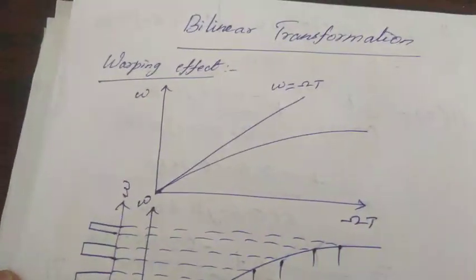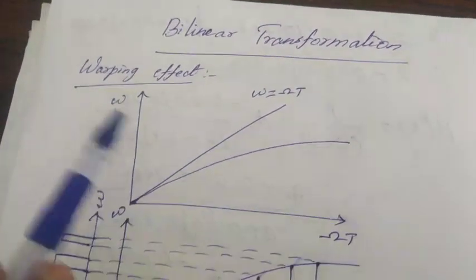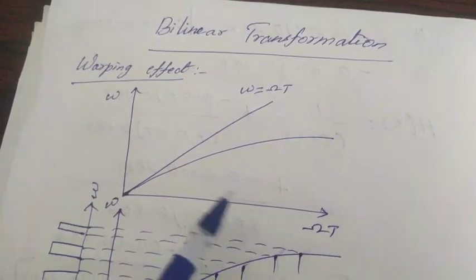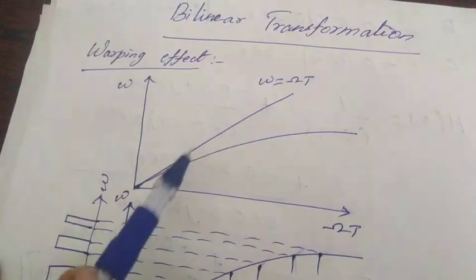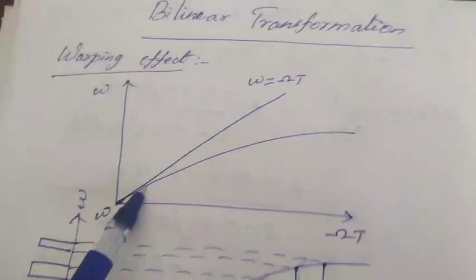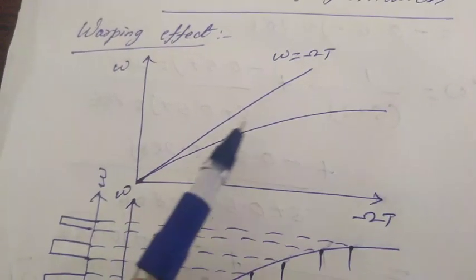In the warping effect, in the bilinear effect, actually it is linear. At low frequencies, you are getting the linear characteristics.